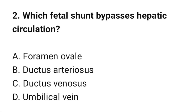Question number 2. Which fetal shunt bypasses hepatic circulation? The correct option is C: ductus venosus.